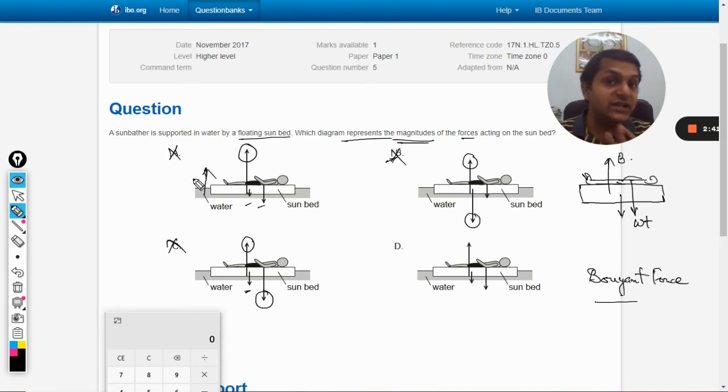So accordingly D should be the correct answer, but we must verify. So this is the upward force, that is the buoyant force. This is the weight of the bed and this is the weight of the man. As per the length of the two vectors are concerned, we can see it is evident here that the length of the w1 vector and the length of the w2 vector, when they are added together,